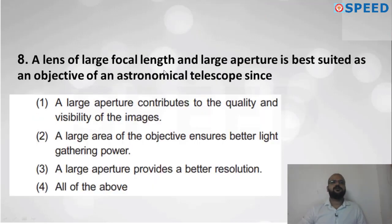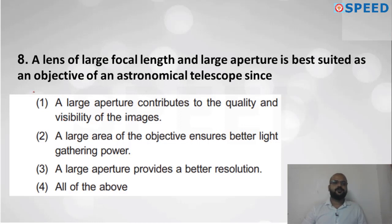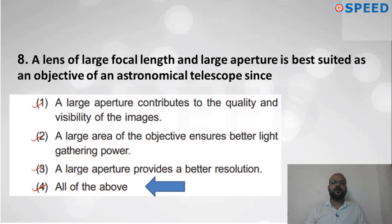Question eight: A lens of large focal length and large aperture is best suited as the objective of an astronomical telescope. Option A: a large aperture contributes to image quality and visibility — correct. Option B: large area ensures better light-gathering power — also correct. Option C: large aperture provides better resolution — also correct. So answer is option four: all of the above.